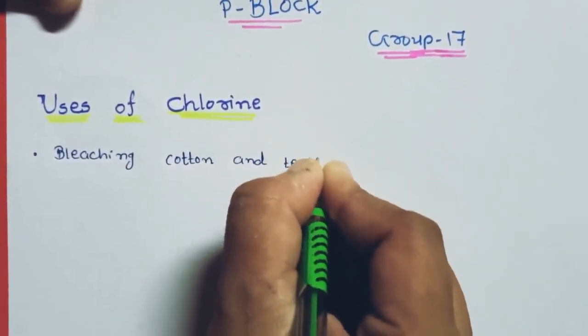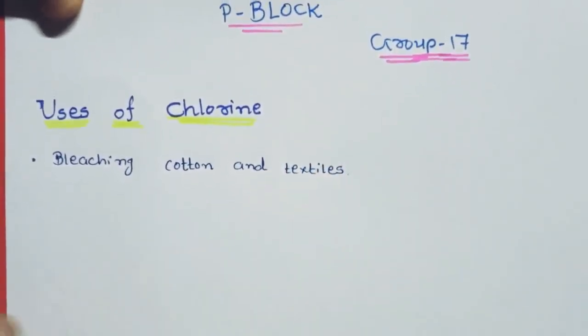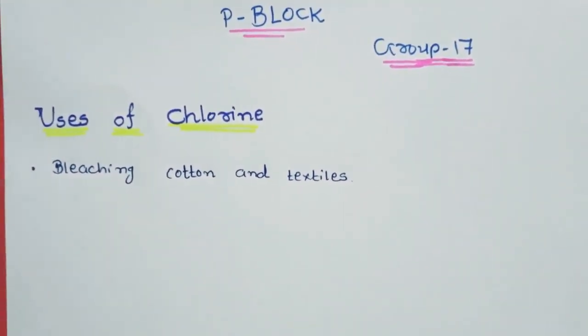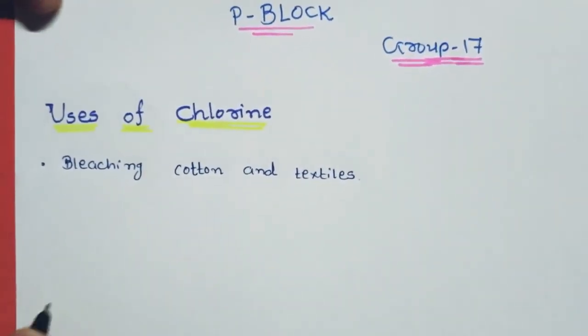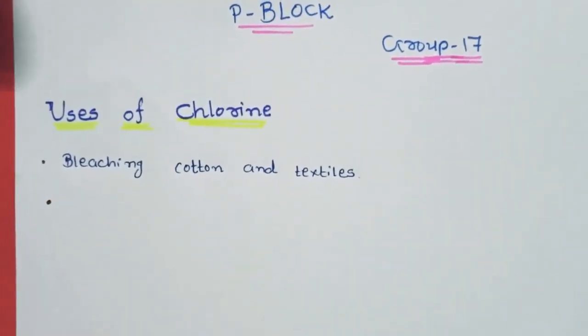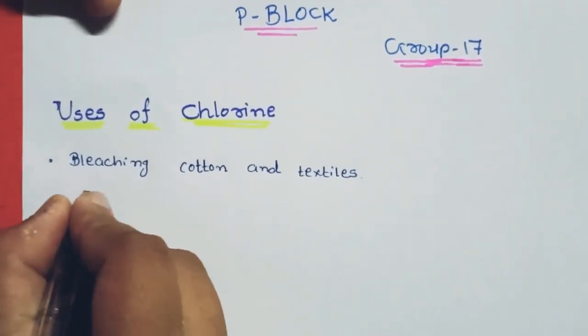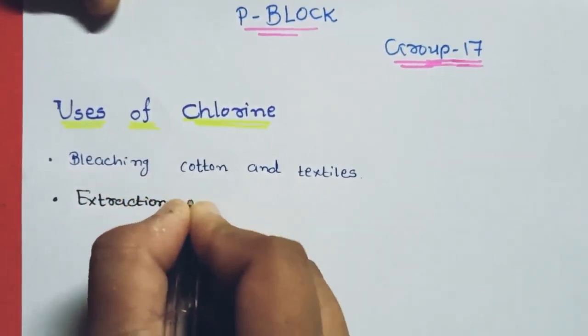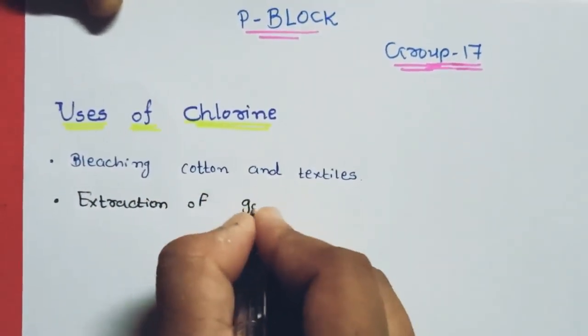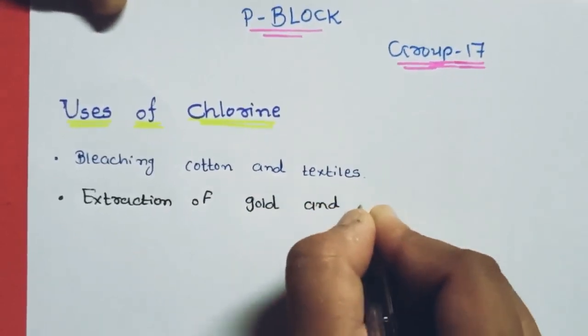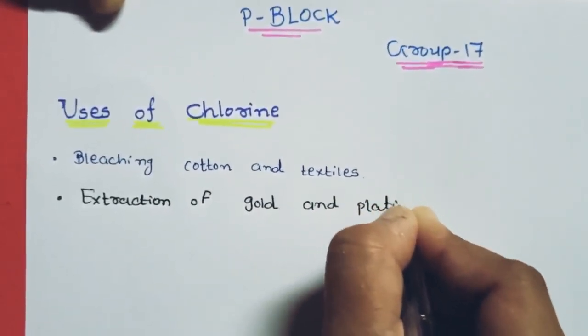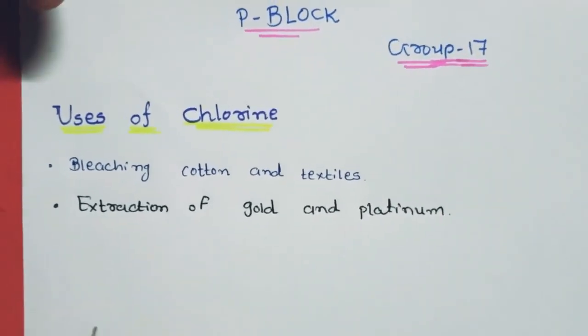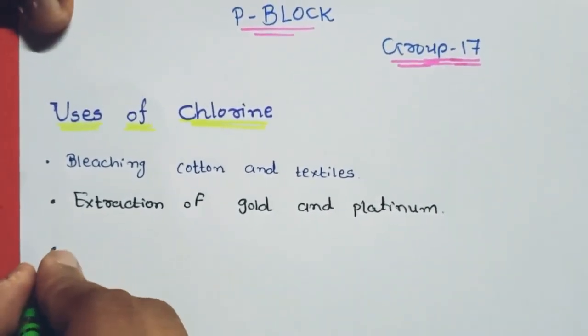The second use is extraction of gold and platinum. Chlorine is used in the extraction of gold and platinum.